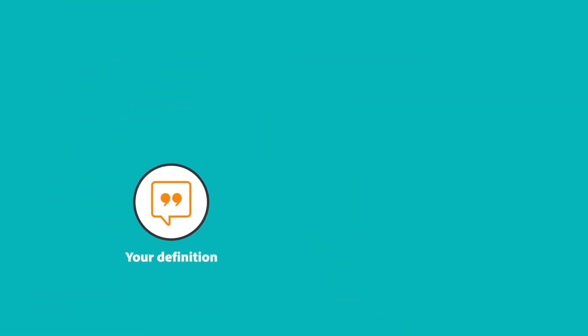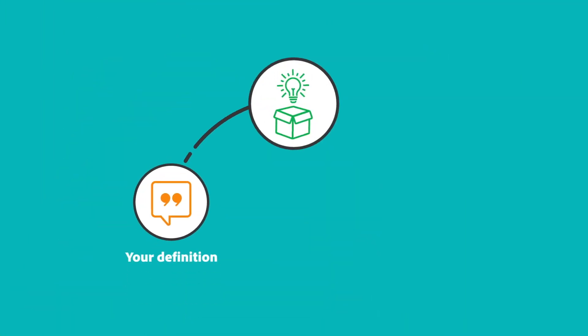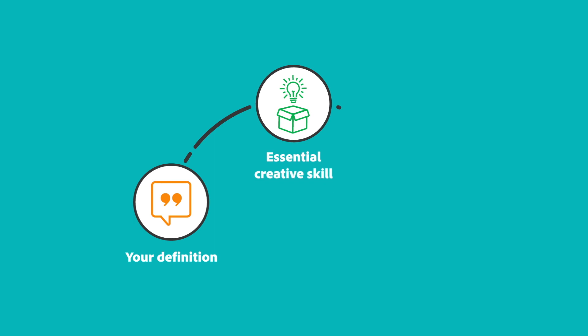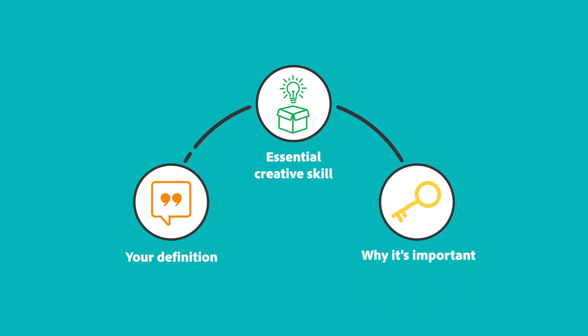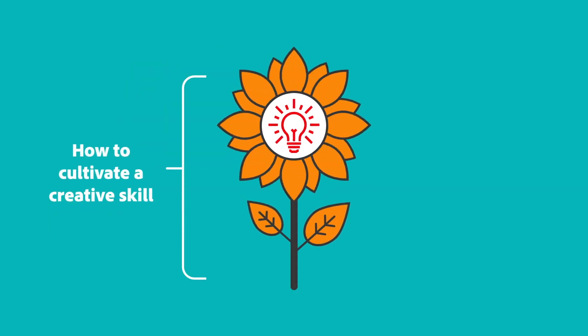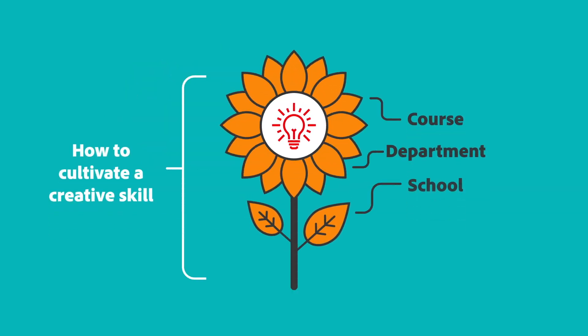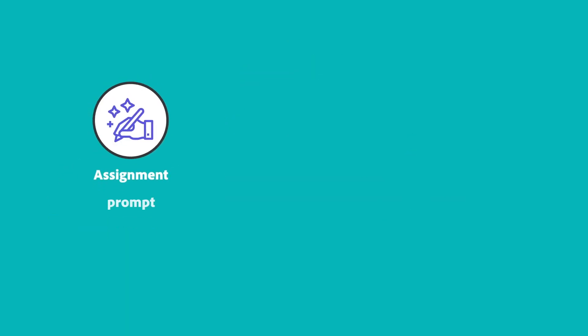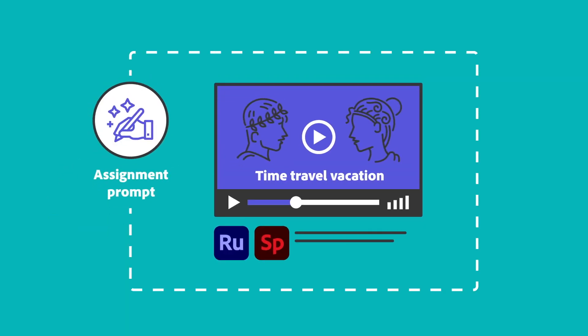1. Your definition of at least one essential creative skill and why that skill is important for your students. 2. A brief vision for how you might cultivate a creative skill in your course, department, or school. 3. A brief example or summary of an assignment prompt that illustrates your vision.